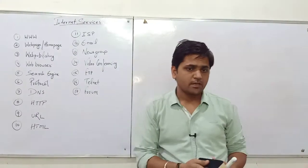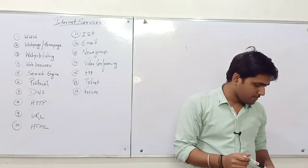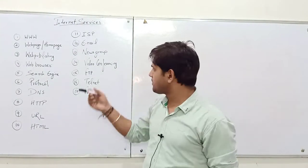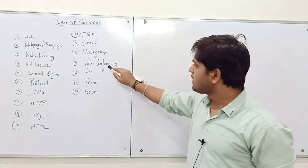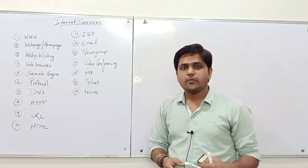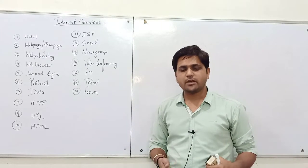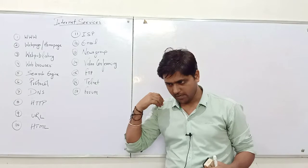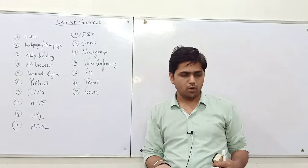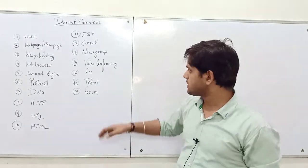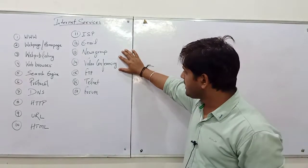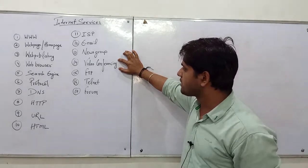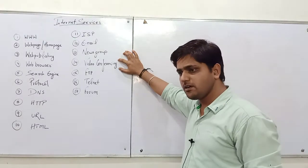Video conferencing is one of the basic needs nowadays — most people use it because within a second you can make a visual call to any person nearby or far away. For that, you also need a unique address followed by the domain.